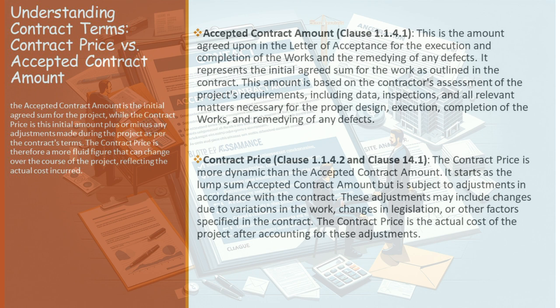Think of the contract price as a living entity within your project. It evolves, reflecting the actual cost incurred as the project moves forward. This is crucial because it means that the final amount paid might be different from what was initially agreed upon. It's a figure that adapts to the realities of the project, ensuring that all parties are fairly compensated for the actual work done and expenses incurred.